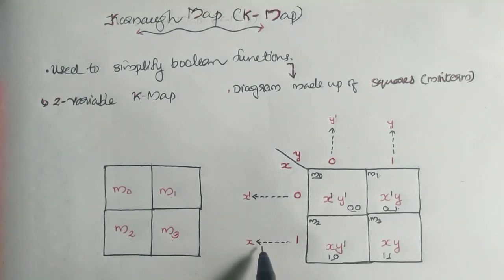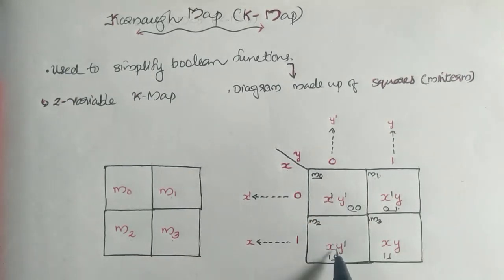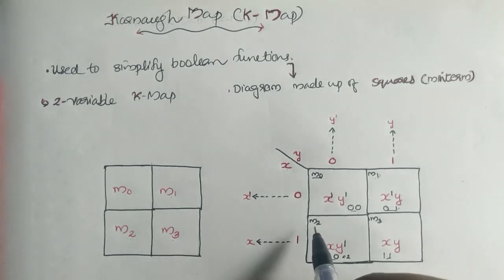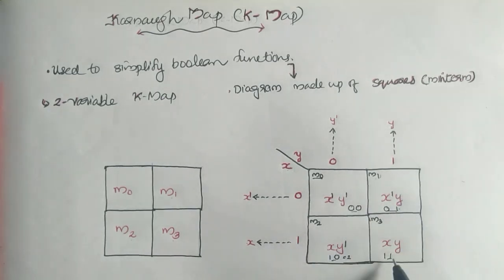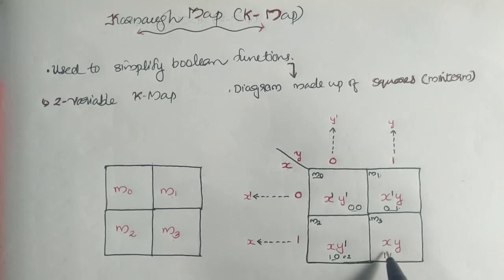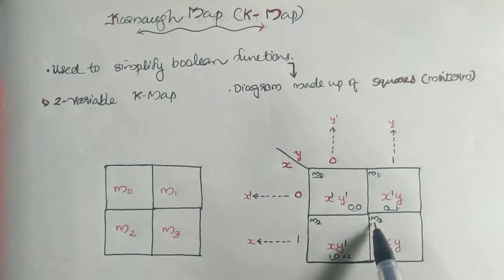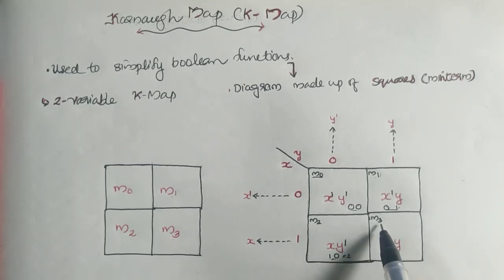The next element is 1,0 or X, Y bar. 1,0 means 2 in decimal, so M2. And the last element is 1,1 or X, Y. This 1,1 in binary represents a decimal three, so we can have M3 or minterm three.